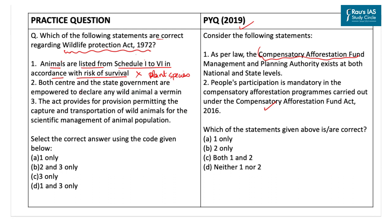The next statement says both the Centre and the State Government are empowered to declare any wild animal as vermin. This statement is also incorrect, because the 1991 Amendment Act withdrew all the powers of the State Government — State Governments are no longer empowered to declare any wild animal as vermin. The Wildlife Wardens and their staff now administer this Act.